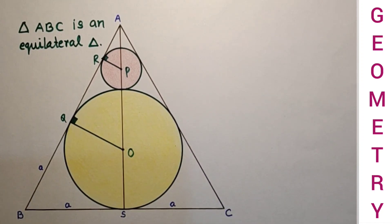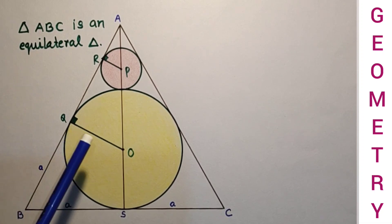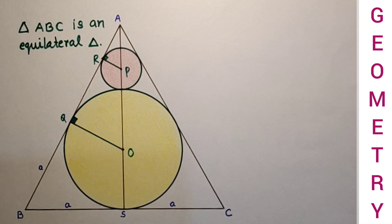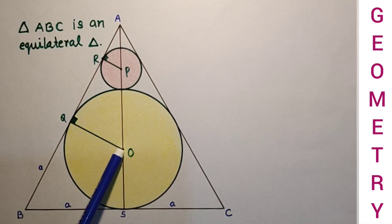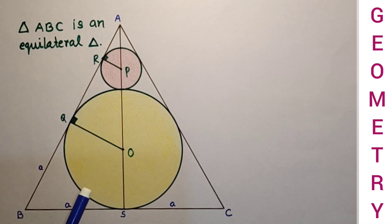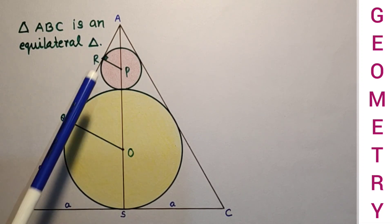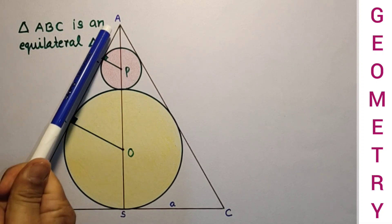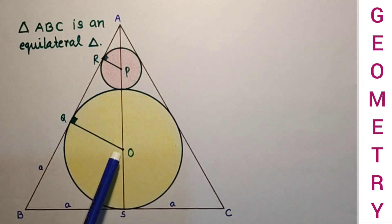As we know that in the case of an equilateral triangle, the incenter or circumcenter is also the centroid, and this centroid divides the median in the ratio 2 is to 1. So we can say that AO to OS is equal to 2 is to 1.